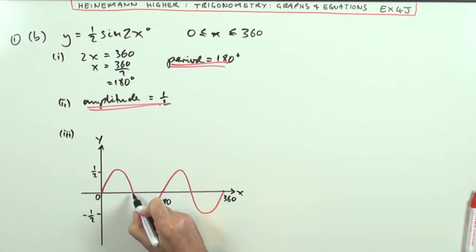I suppose I could put in those ones at 90 and that's going to be 270. Putting the turning points makes it a bit crowded, maybe I'll just leave it like that.